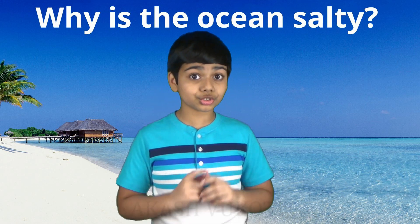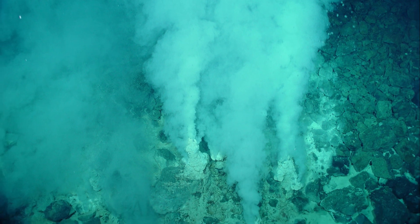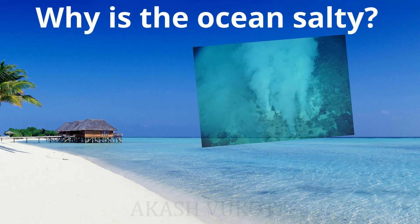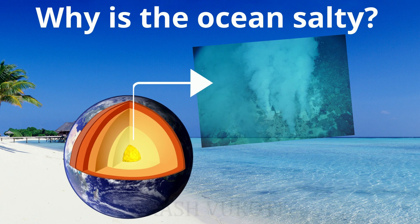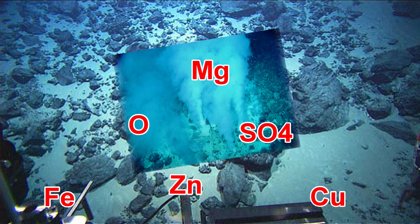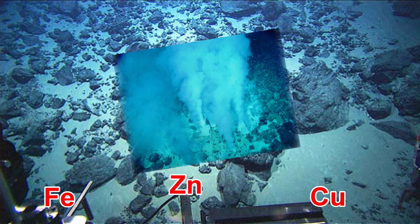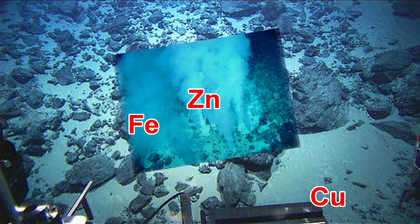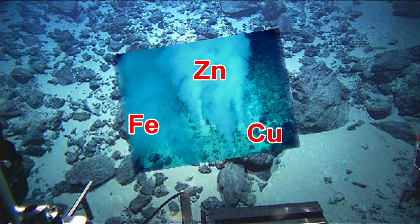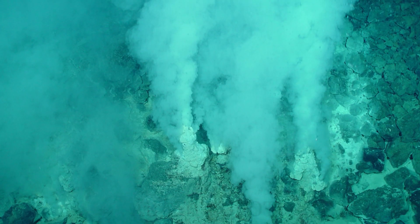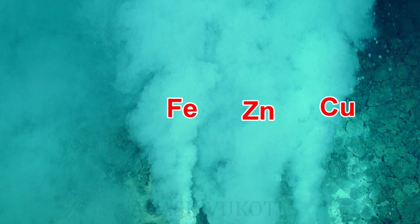Another source of salts in the ocean would be hydrothermal fluids, which come from vents in the seafloor. Ocean water seeps into cracks in the seafloor and then gets heated by magma from the Earth's core. The heat causes a series of chemical reactions. The water tends to lose its oxygen, magnesium, and sulfates, and starts to pick up metals such as iron, zinc, and copper from surrounding rocks. Then this heated water is released through vents in the seafloor, carrying the metals out with it into the ocean.